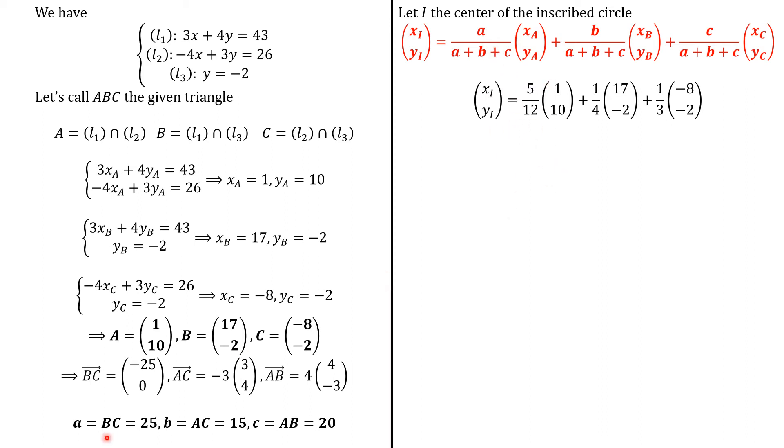We know that a over a plus b plus c is going to be 5 over 12, because a is 25, and this sum is 60. So, 25 over 60 is 5 over 12. We simplify by 5. And the same for this ratio, which is 1 over 4, and that other ratio, which is 1 over 3. And we know the coordinates of A, B, C. So, simplifying, we know that the coordinates of I is 2 and 3.